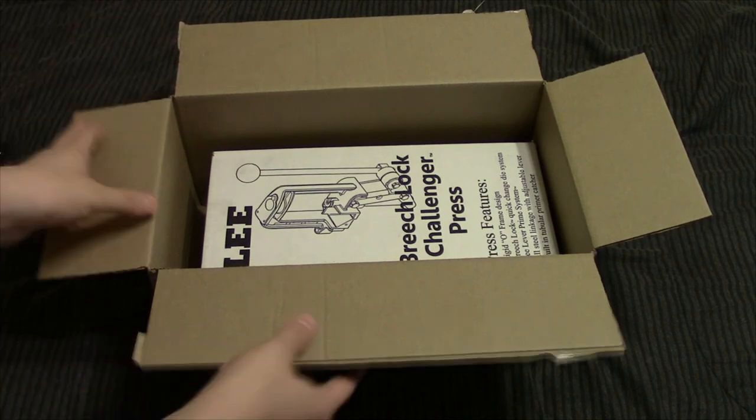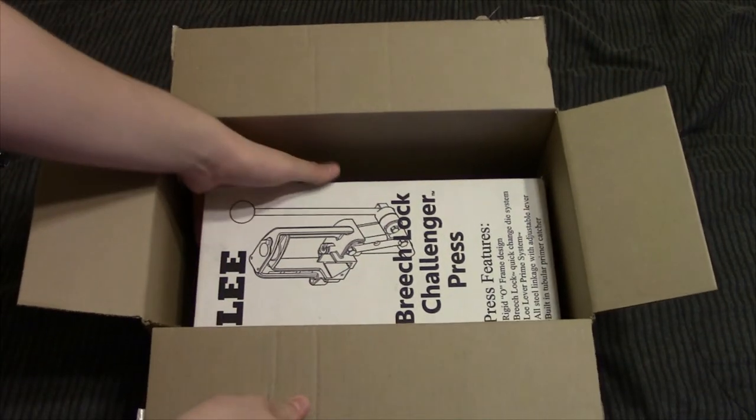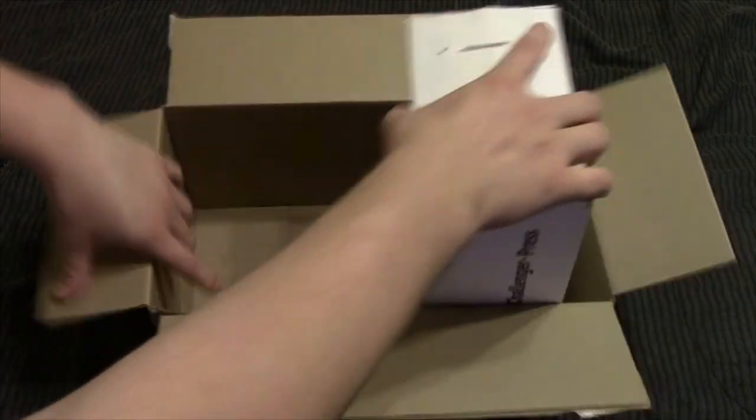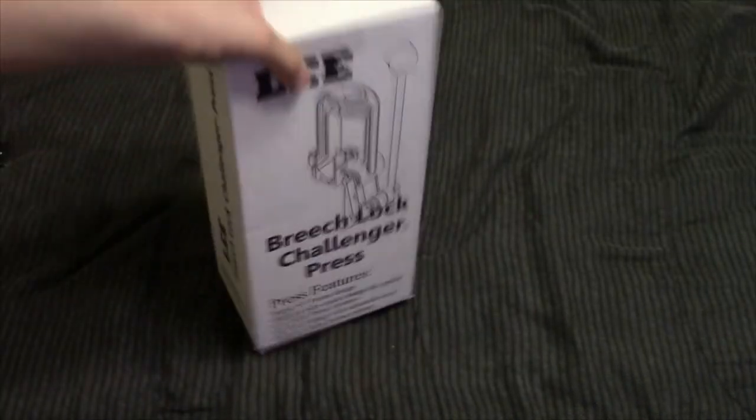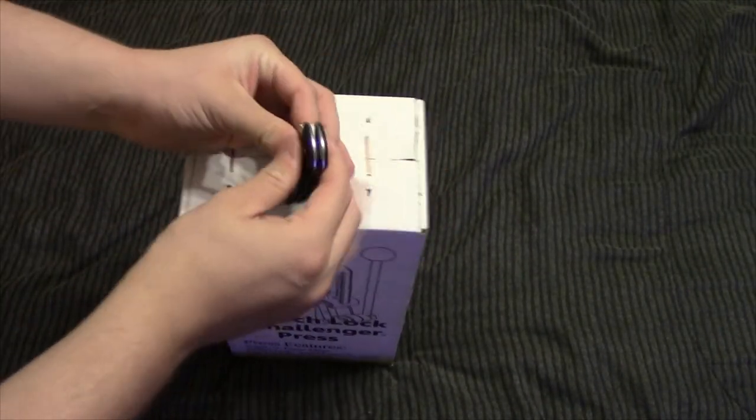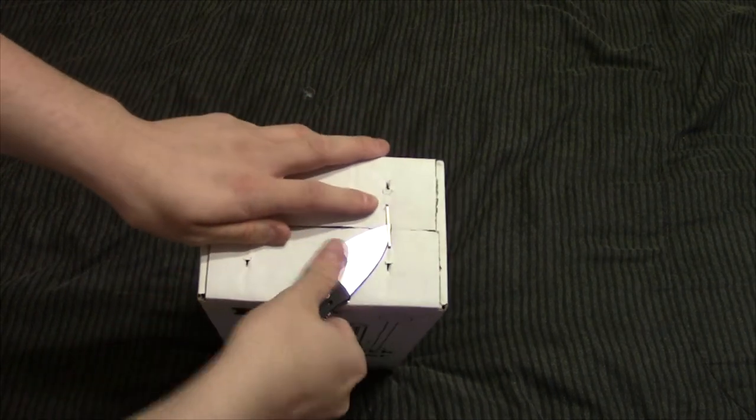So as you've probably read in the title already, this is the Lee Breech Lock Challenger Press. And I don't think there's an invoice in here, luckily, maybe it's in here so I'll have to be careful about that. But here you can see it's actually a much smaller box than I thought it would be and it's stapled at the top.